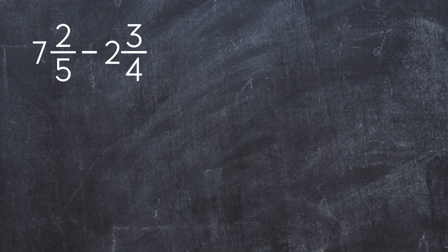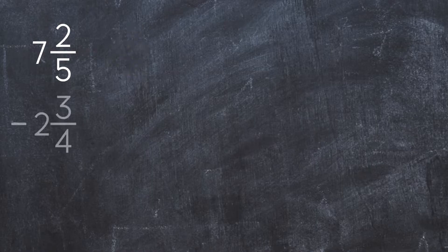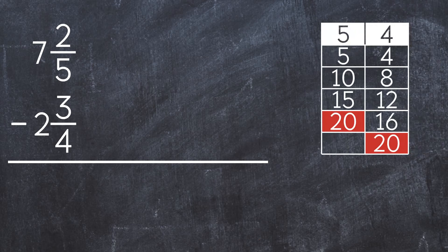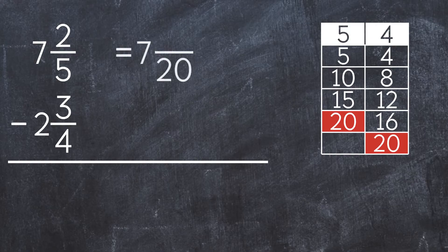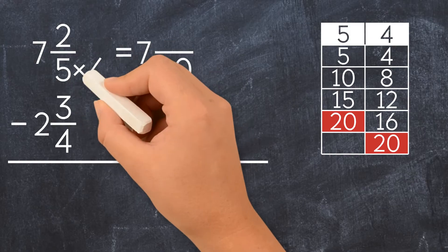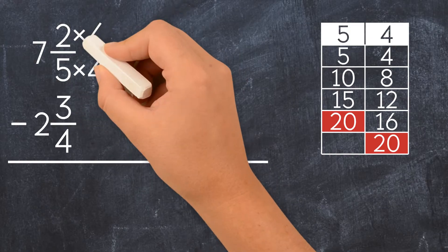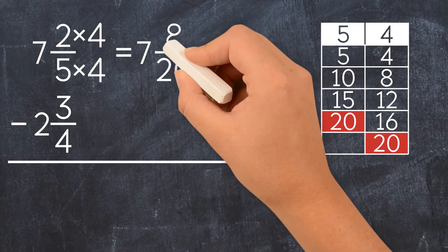Let's do another example: 7 and 2 fifths minus 2 and 3 fourths. Let's turn it into stacked form. First, we find the common denominator. The common denominator between 5 and 4 is 20. To get 20 in the denominator, we multiply 5 by 4. We also multiply the numerator by 4, to get 7 and 8 twentieths.